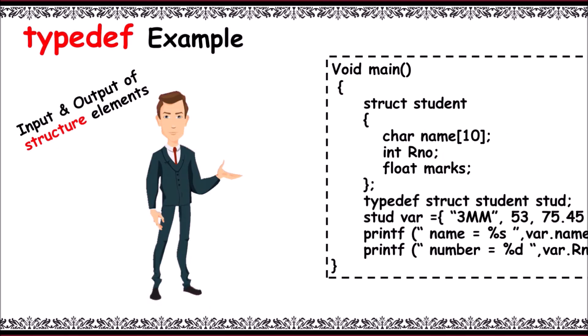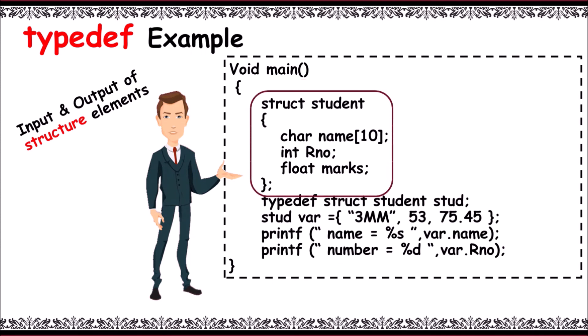Typedef example on structures: main, structure student with three members. Next we use typedef to replace structure student to stud. Next using the same stud where is equal to 3MM, 53, 75.45. Next printing name and printing number.